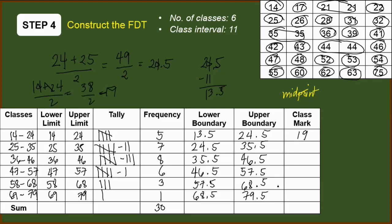Next, we have 25 and 35. Add them, then divide them by 2. We have 30. Another way of solving the class mark is to add 11 from the previous class mark. You may notice here 19 plus 11 is also 30. Adding 11, this is 41, this is 52, this is 63, and this is 74. These are all correct because the classes have uniform interval which is 11.